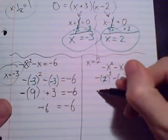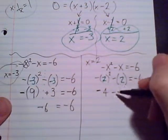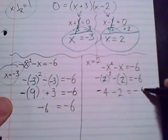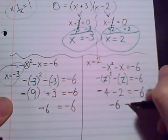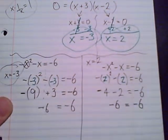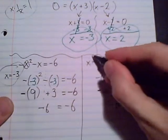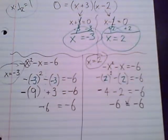Keeping these terms separate, now we've got two to the second power is four. Don't forget about that negative sign, minus two should equal negative six. And it does. Negative four with negative two is negative six. So two solutions, and they both checked out: x equals two and x equals negative three.